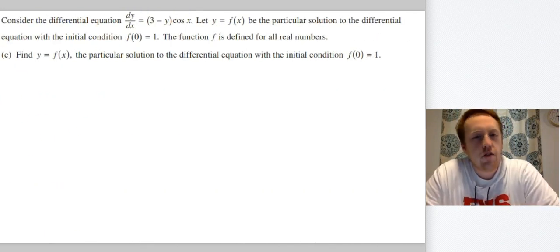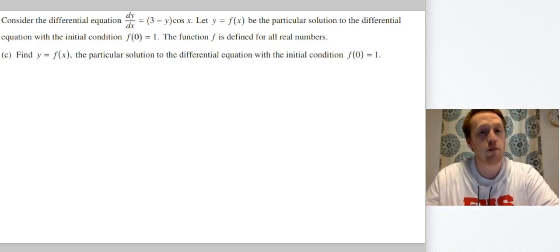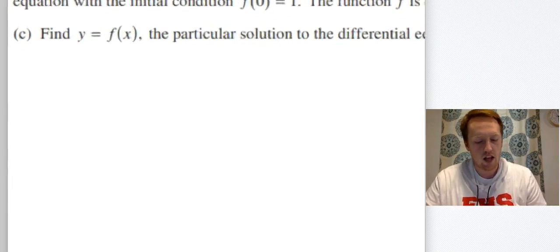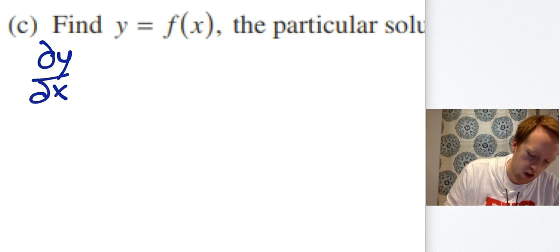Part C, find y = f(x), the particular solution to the differential equation with the initial condition f(0) = 1. All right. This right here, this is the bulk of the problem. I'm going to zoom in. That way I get lots of room to do this because this is where the primary points are coming for on this FRQ.